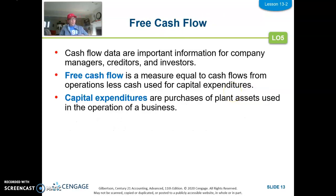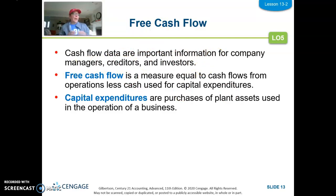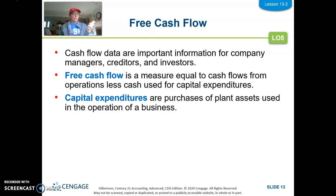The final ratio is free cash flow, which determines whether a company can pay bills by their due date to avoid short-term loans. Free cash flow equals cash flows from operations — from the statement of cash flows — less cash used for capital expenditures. Capital expenditures, or CapEx, are purchases of long-term assets such as plant assets, equipment, computers, buildings, and land.